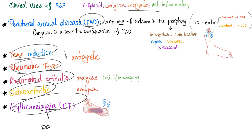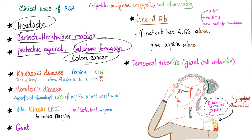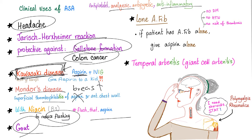Other uses: headache, Jarisch-Herxheimer reaction. Protective against gallstone formation and colon cancer. Kawasaki disease — the only exception for using aspirin in a kid. Mondor's disease, which is superficial thrombophlebitis of the breast and anterior chest wall. With niacin to reduce flushing. And gout, because it's analgesic and anti-inflammatory. In lone AFib and in temporal arteritis — but don't forget to give steroids.